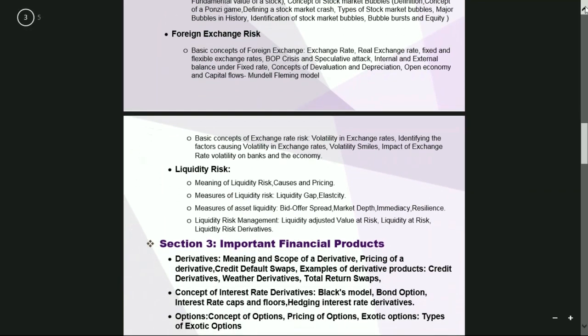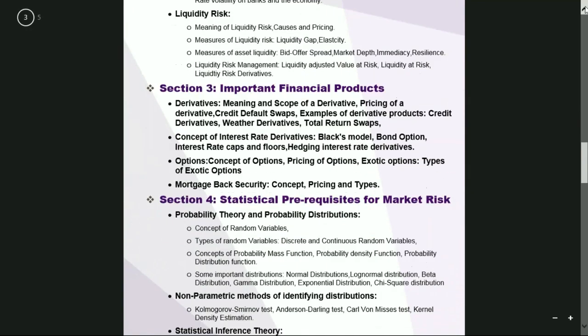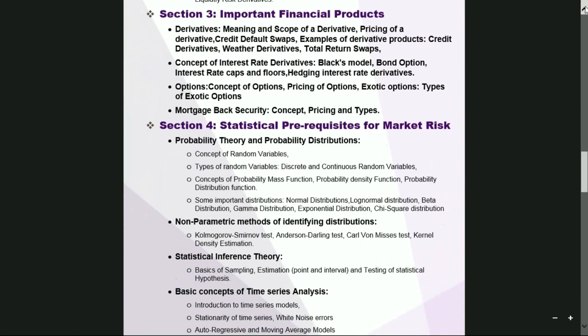When I talk about market risk, the most important thing that comes to mind is the important financial products, because it is through these products that the risk is transferred to the banks. If a bank owns a stock of some company XYZ and has invested millions into a stock portfolio, and we see that the stocks in that portfolio crash, the bank suffers a huge loss.